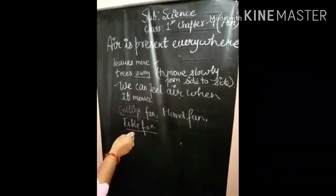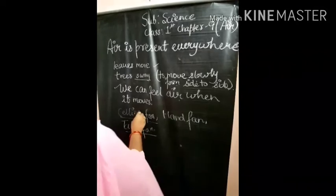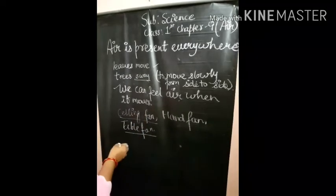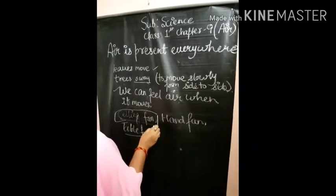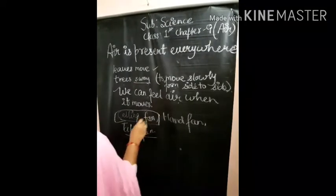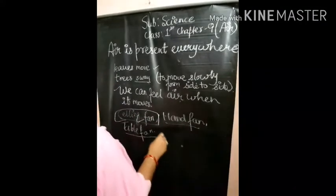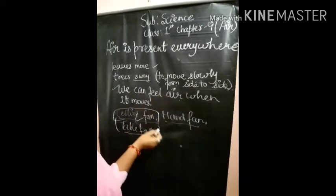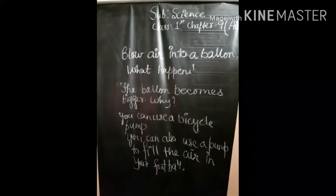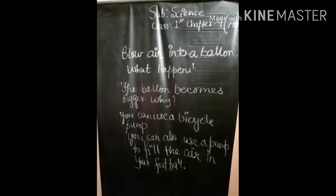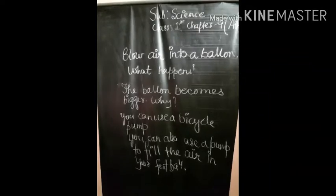These are the examples of moving air. This shows us that air is moving around us. You can feel the air by starting your ceiling fan or your hand fan or your table fan. From these examples, you will be able to learn that air is present around us.